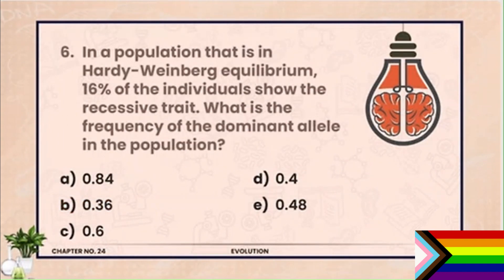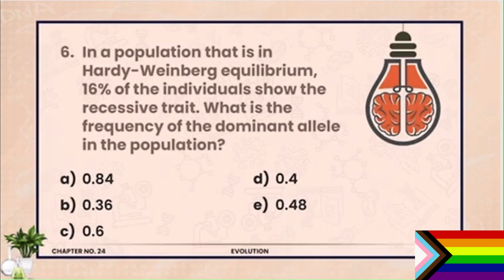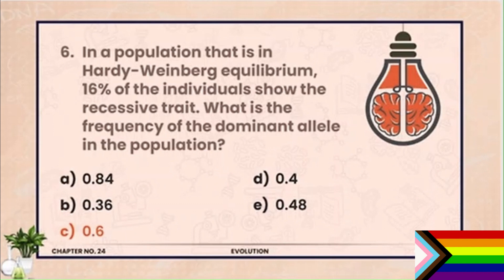MCQ 6. In a Hardy-Weinberg equilibrium population, 16% of individuals show the recessive trait. What is the frequency of the dominant allele? Since recessive individuals = q² = 0.16, taking square root gives q = 0.4. Then p = 1 − q = 1 − 0.4 = 0.6. The correct answer is 0.6 (option C).